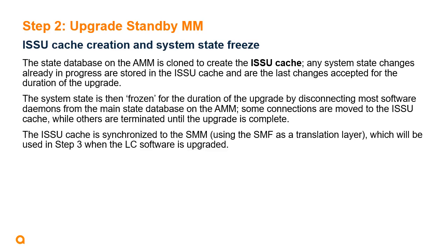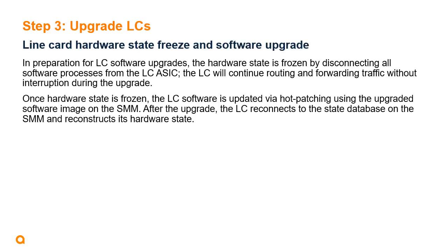In preparation for upgrading the line card software, the line card hardware state is frozen by disconnecting all running software processes from the line card ASIC, which will continue routing and forwarding traffic uninterrupted during the upgrade. Once the line card hardware state is frozen, the line card software is upgraded by hot-patching the running software from the upgraded software image on the standby management module. After the upgrade, the line card reconnects to the state database on the standby module and reconstructs its hardware state using that data.